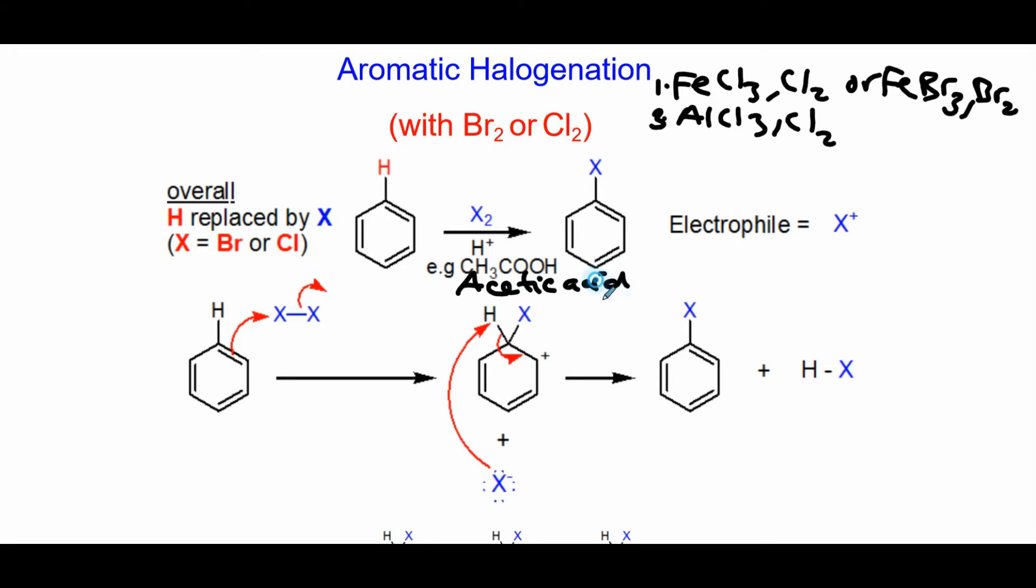And your halogen of choice, usually Br2. The electrophile would be X+, that's the electrophile. The acetic acid here is just used to keep the reaction going, kind of activates the reaction somehow, but it's not typically directly used in the mechanism.